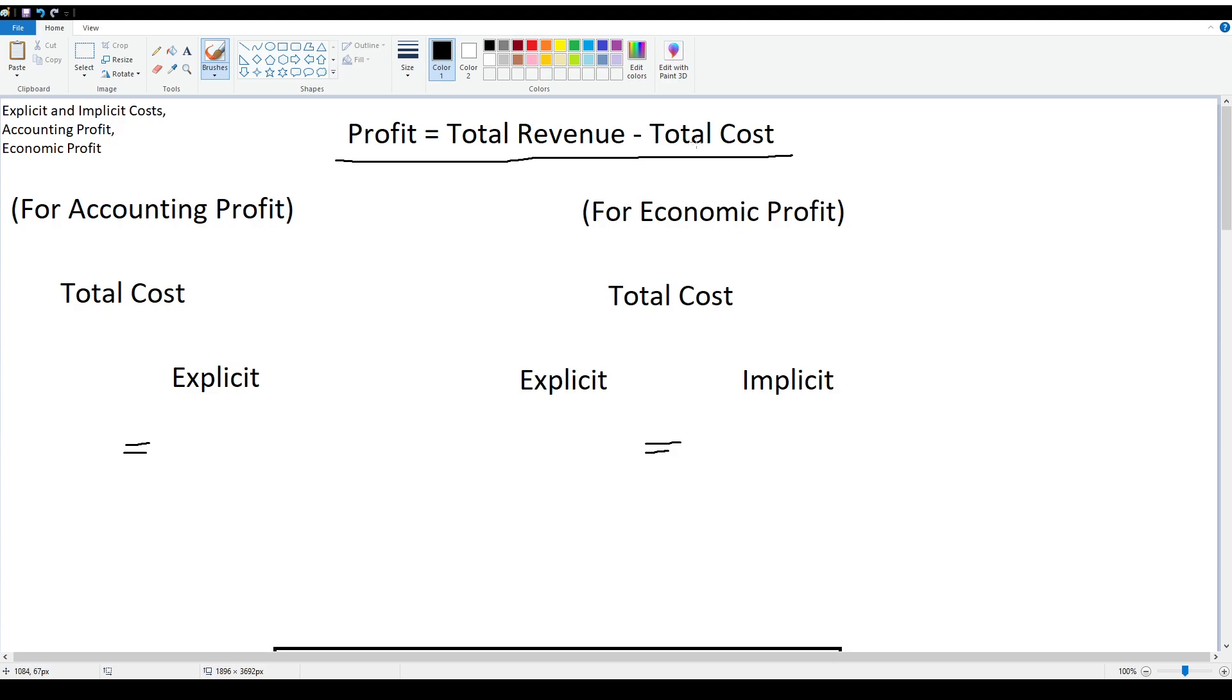Now where these two differ is with the total cost. For accounting profit, you're only going to look at the explicit cost, but when it comes down to economic profit, you're going to look at the explicit and the implicit.